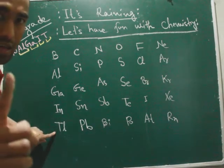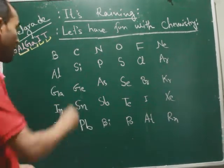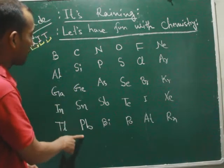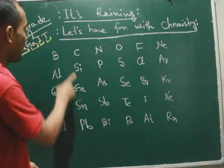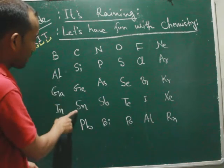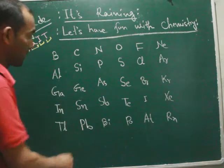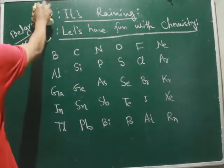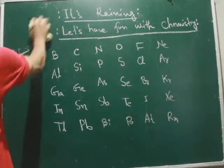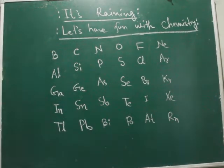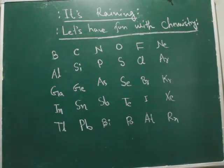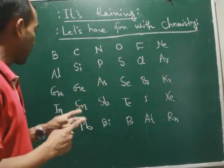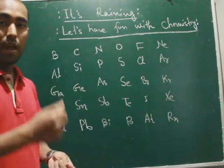Next. So this is Group 14: Carbon, Silicon, Germanium, Tin, and Lead. I will tell you how to remember this one.